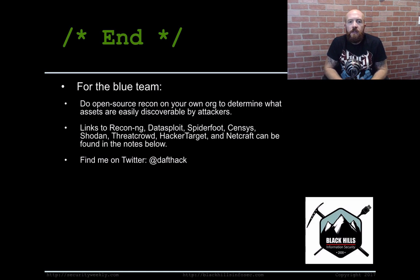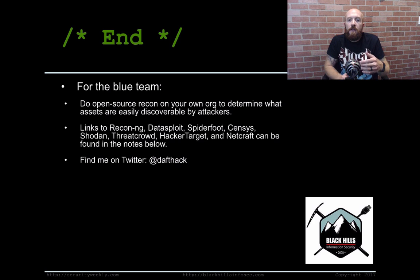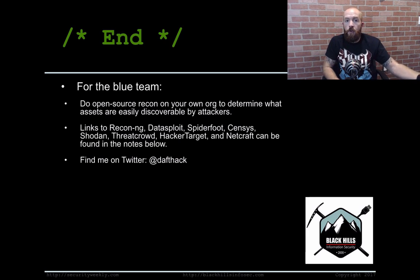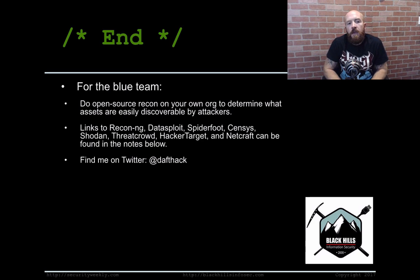I want to say to the blue team — do this for your own company. If you have an organization and you have externally facing assets, make sure you know about what is where. Know that you have network ranges, but additionally understand that remote attackers who have no privy to your information or your intellectual ability to have that internal knowledge of what's going on inside your network — that they can find this kind of stuff with open source tools without ever really port scanning your external network. So go do it — just get an idea of what's out there and what's discoverable easily by an attacker. I'm going to include all the links to all these various tools and techniques in the show notes below. Follow me on Twitter at DavTech. Thanks and have a great day.